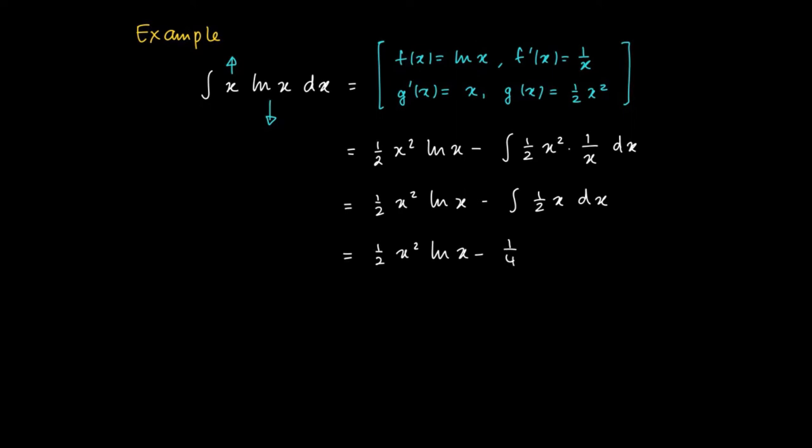So we get as a primitive: a half times x squared ln x, minus one quarter x squared, plus an integration constant.